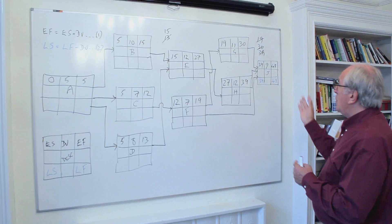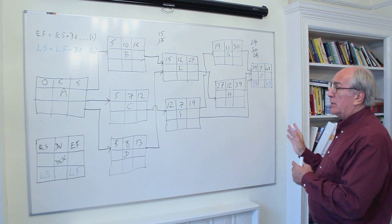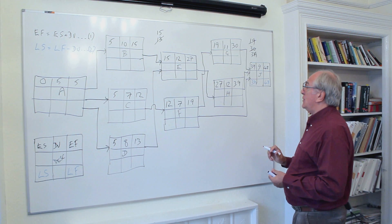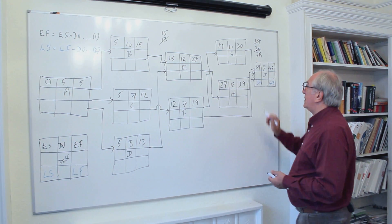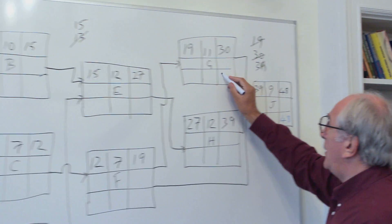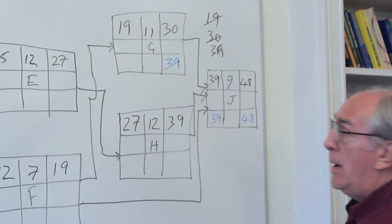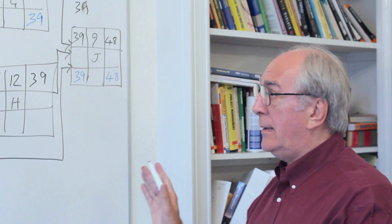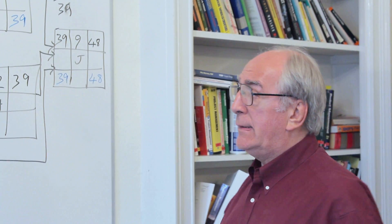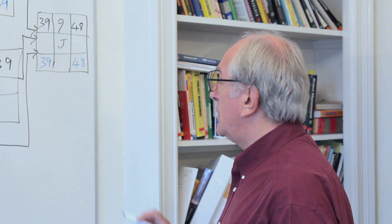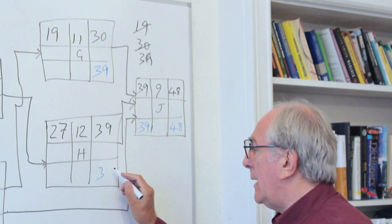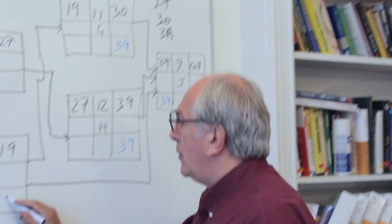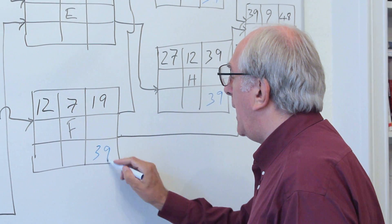We can move that backwards through the network, because what we're doing now is a backward pass. And we can say that the latest finish time for activity G is the same as that late start time for activity J. That would be 39. Remember, we're talking time units, not days, not weeks. This is an abstract here for you to understand the logic and the timing and the equation. So that 39 operates in activity H, and it also operates in activity F.